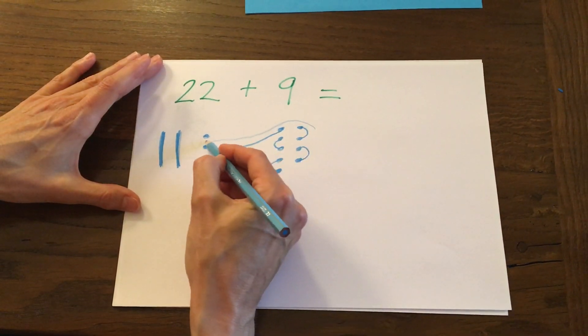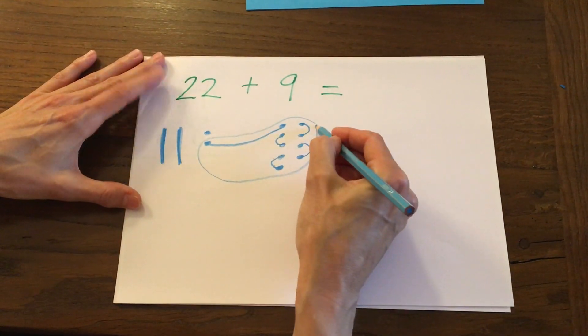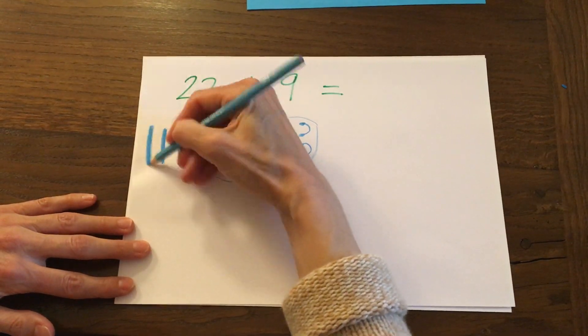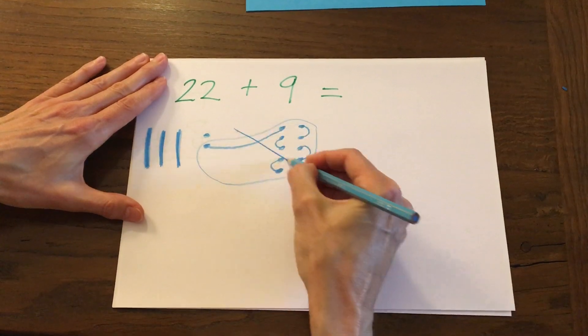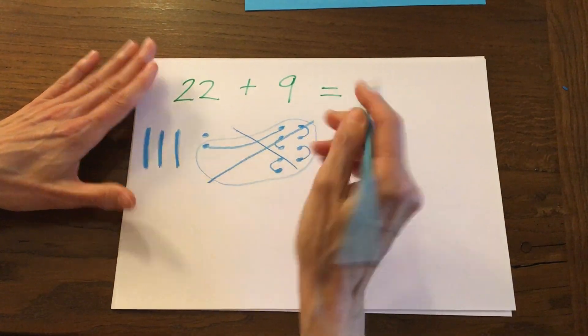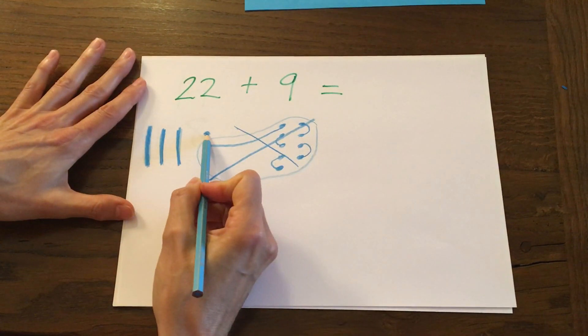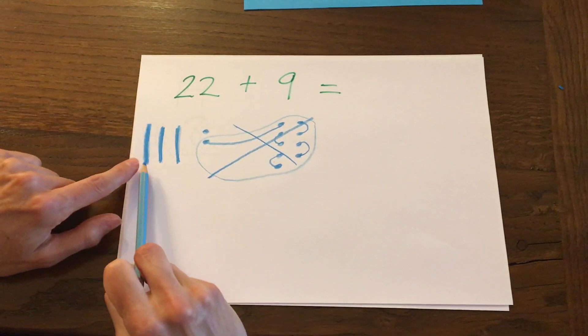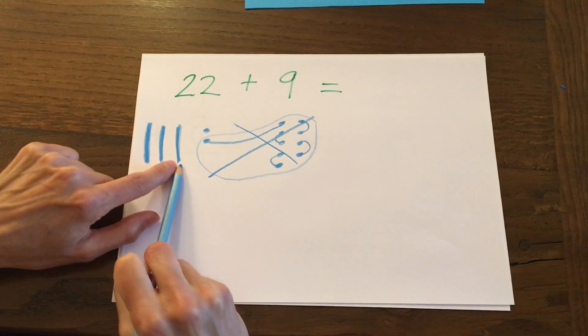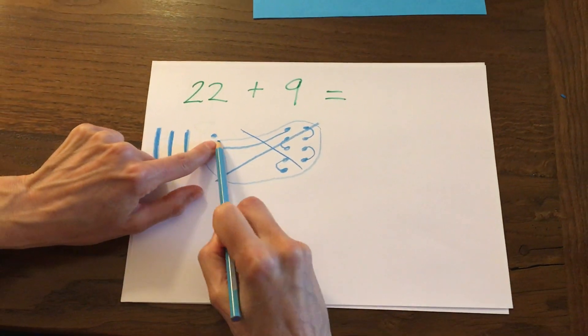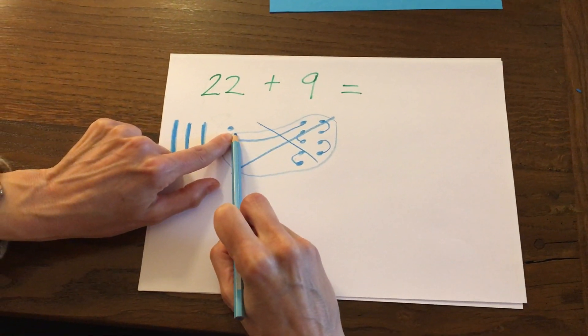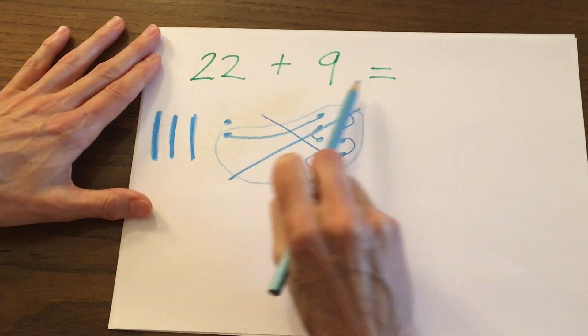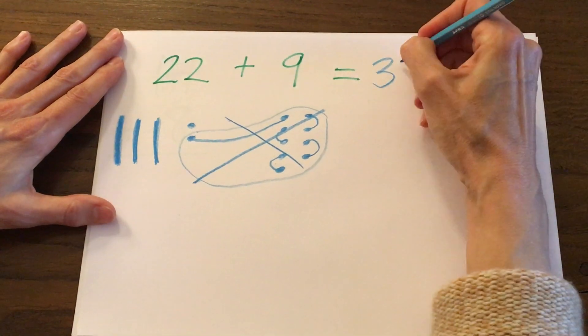So these ones get traded for a 10. Let me draw that 10 over here and I'm going to X out all those ones. They go bye-bye. We still have this little one though. Don't forget about that guy. What we have left is 10, 20, 30, 31. That means that 22 plus 9 equals 31.